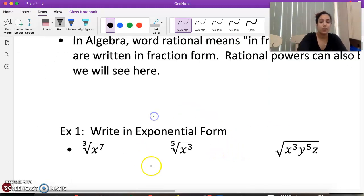Let's put, these are in radical form. We have to put them in exponential form. Exponential form, this is going to have the same base. It is going to be power over root. Power is the seven and the root is the three. That is it.